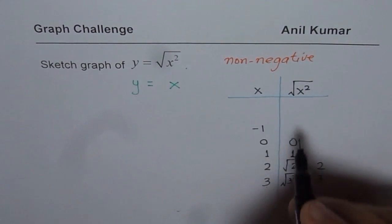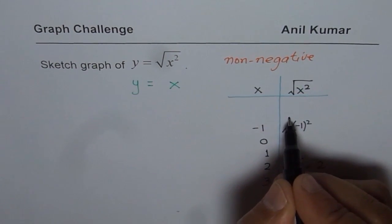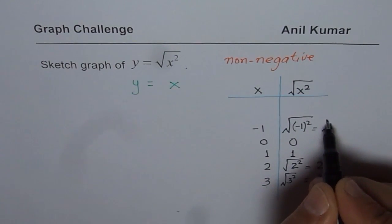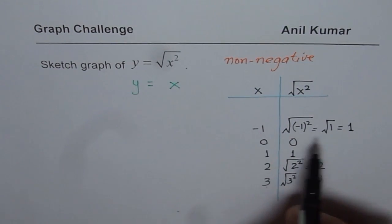Let us do the calculation. We are trying to do square root of minus 1 squared, right, which is positive 1 square root and which is same as 1. It is not negative. Do you see that?